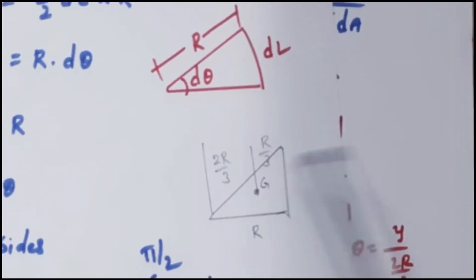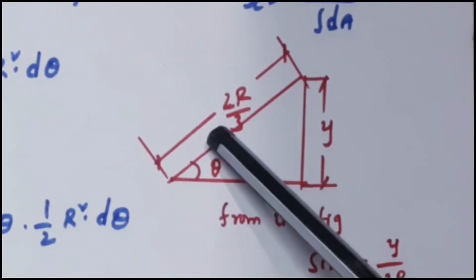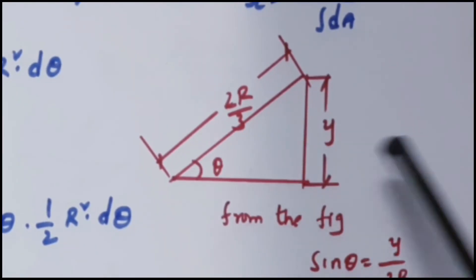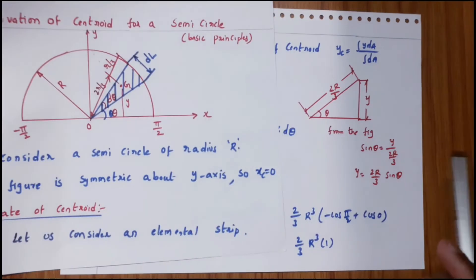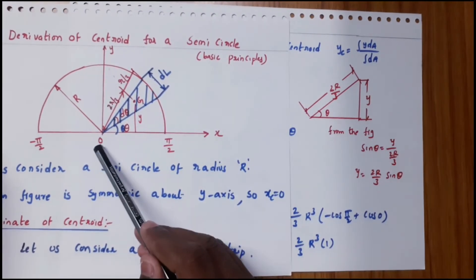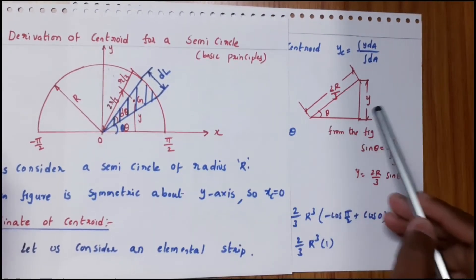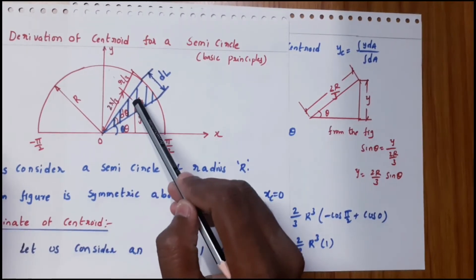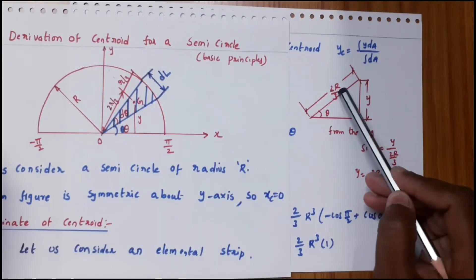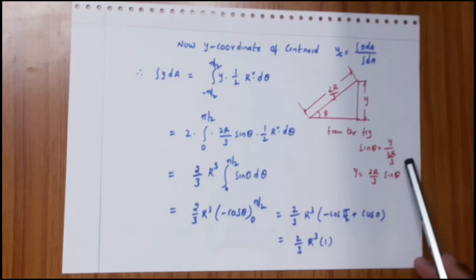For the triangular strip, the centroid is located at 2r/3 from the apex. So from the center (origin), the centroid of the strip is at a distance of 2r/3. This length is y.